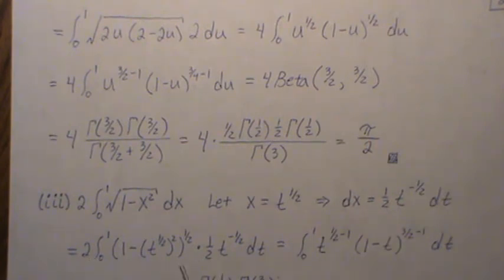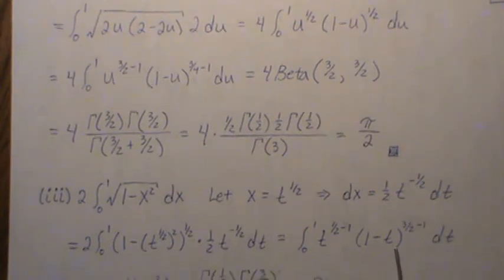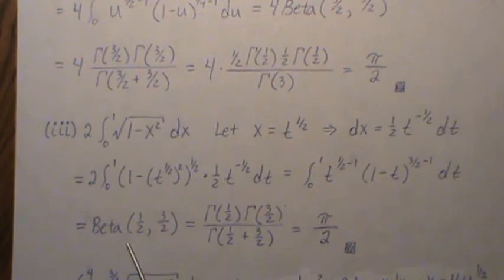The 2 and the 1/2 cancel, and then this we can write as t to the 1/2 minus 1, and then this is this, which is exactly a beta function, which is this.